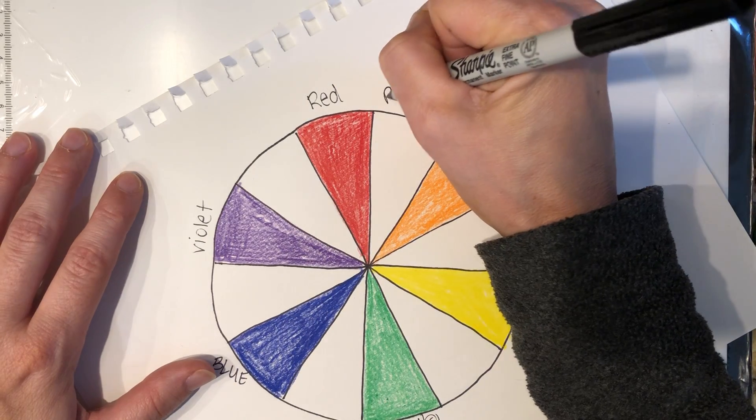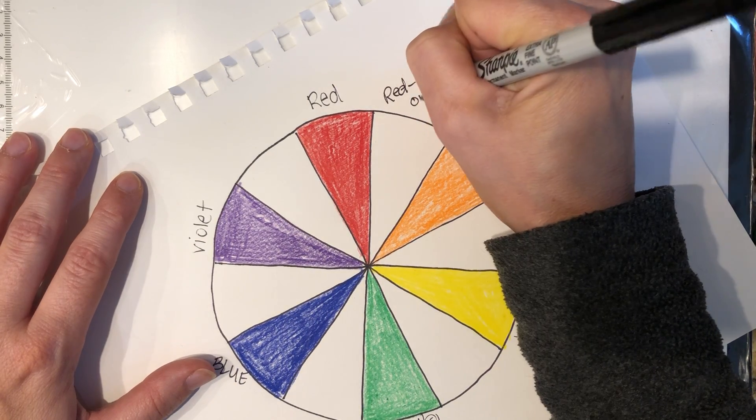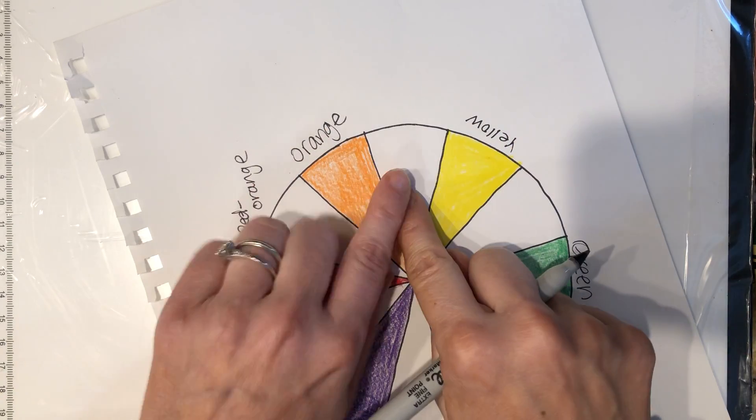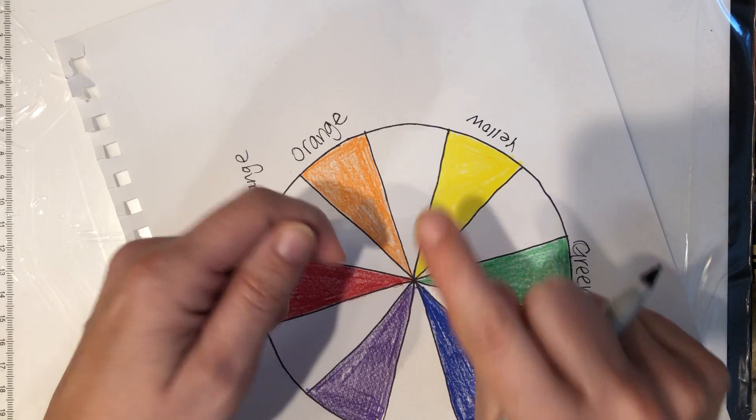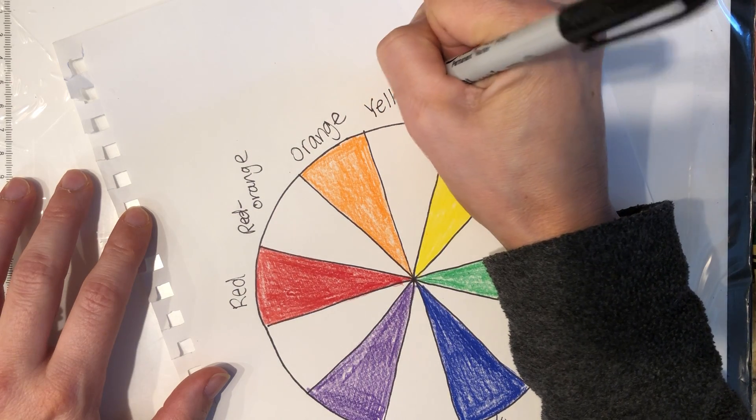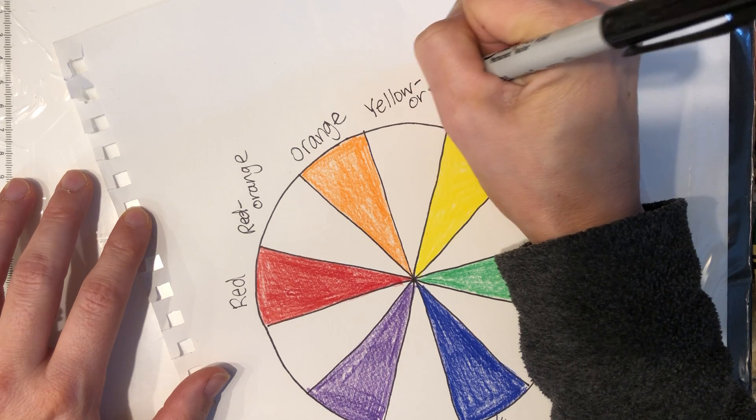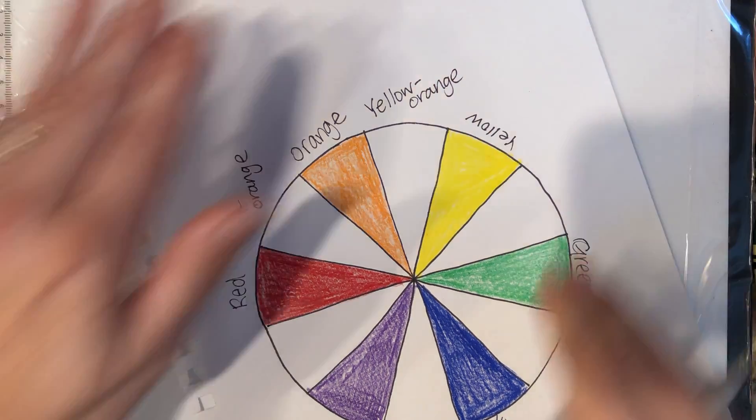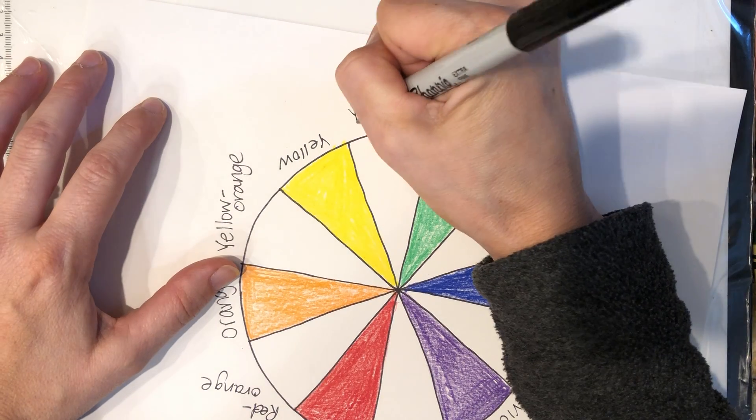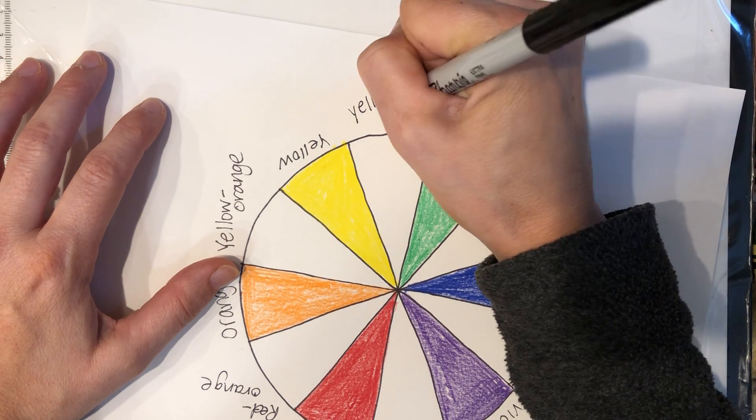Let's go around and name them together. We have red and orange touching, so the name of this color is red-orange. Turning the wheel. I have orange and yellow touching, so I take the name of the primary color, which is yellow. So the name of this color is yellow-orange. Turn. I have yellow and green. The primary is yellow, so the name of the color is yellow-green.